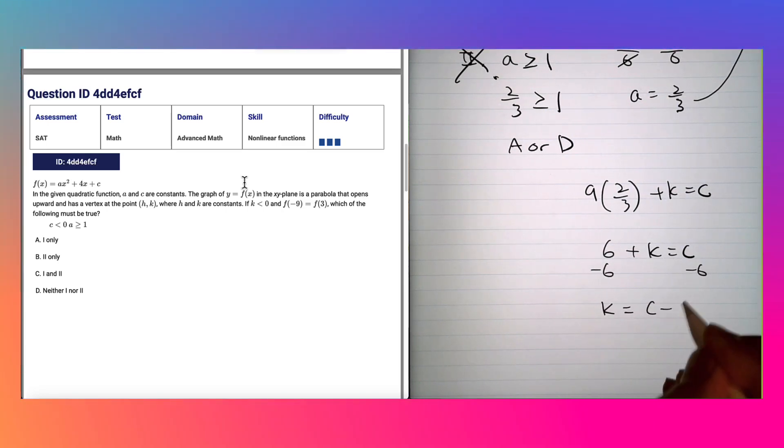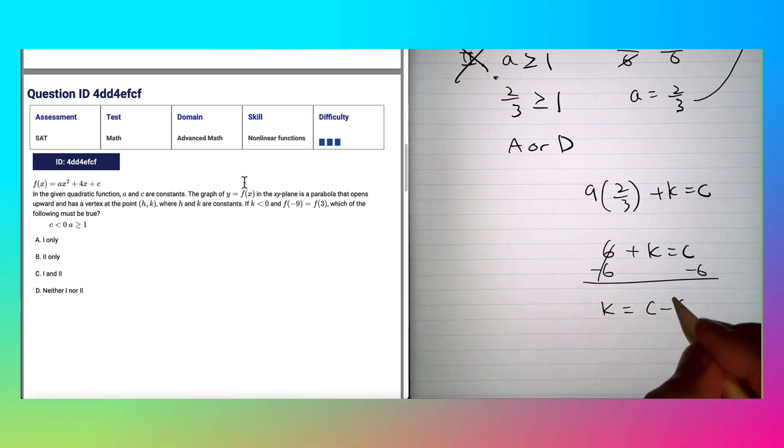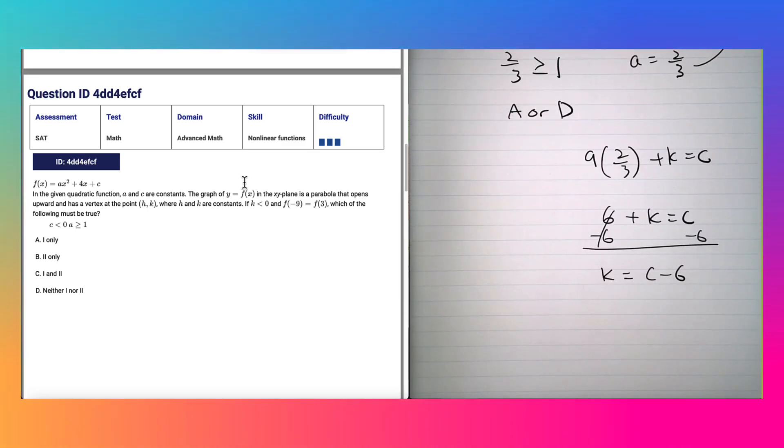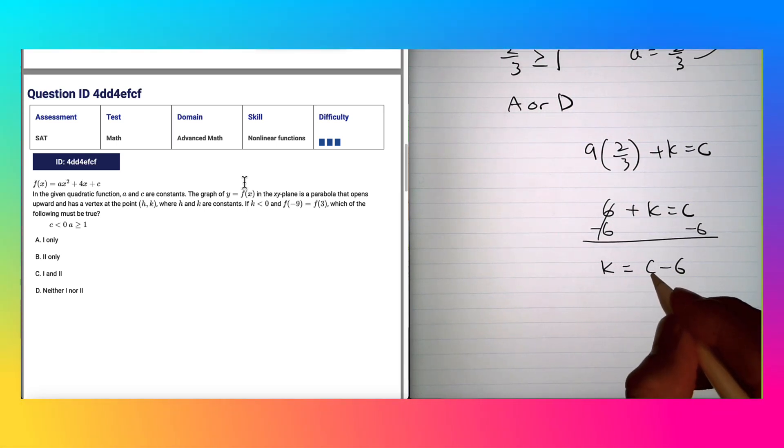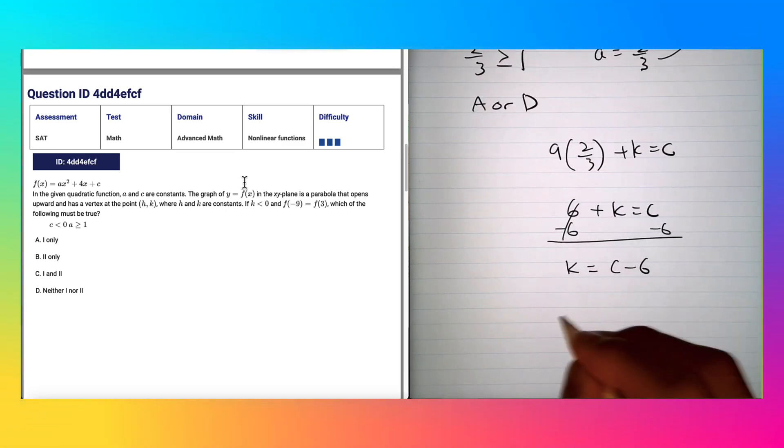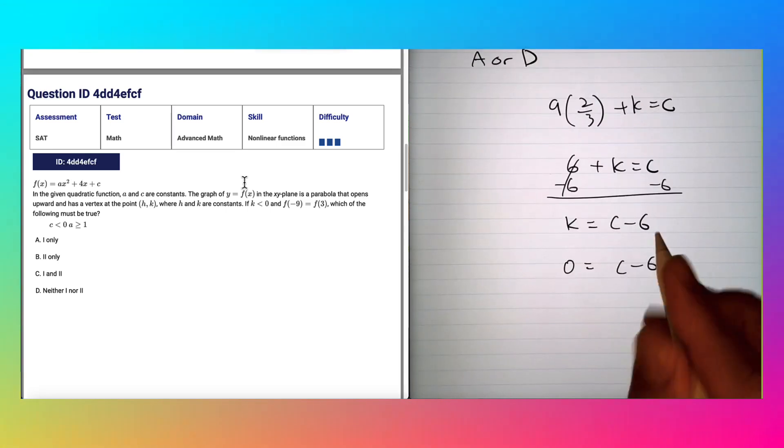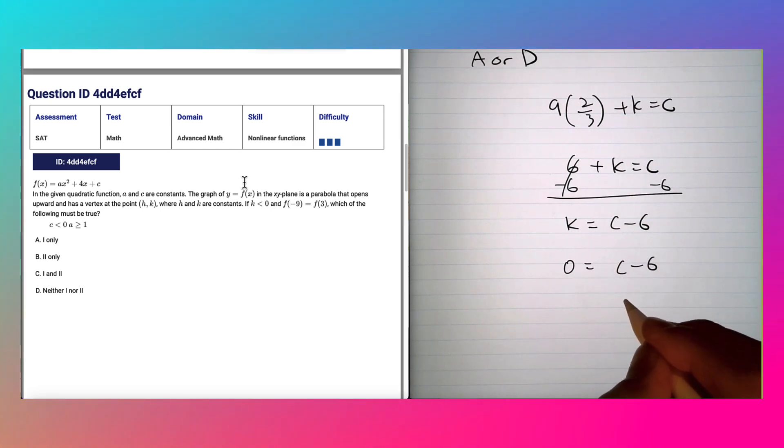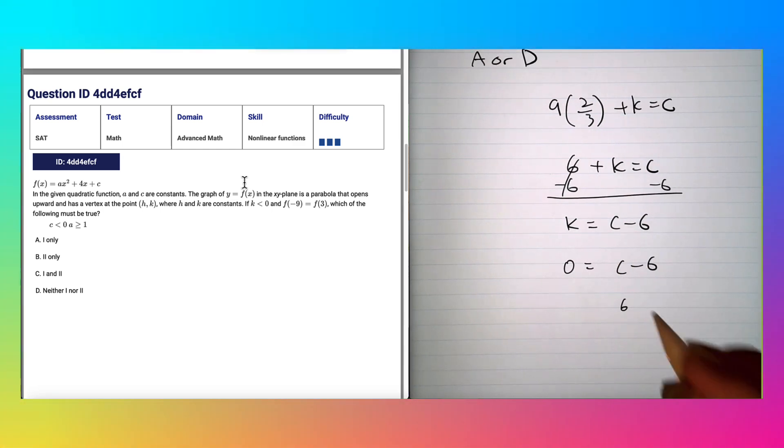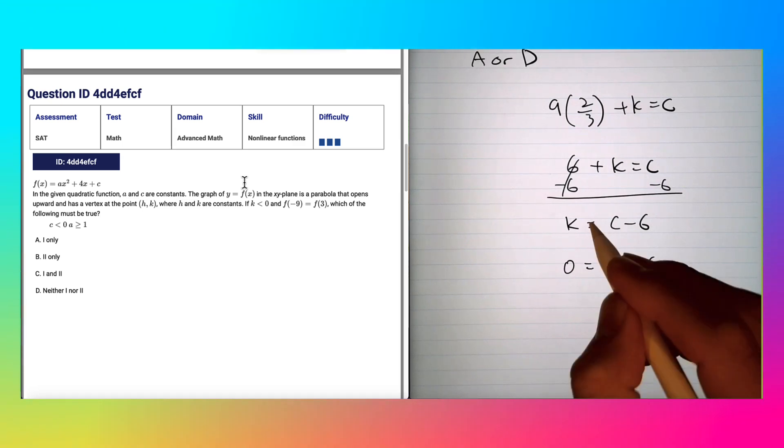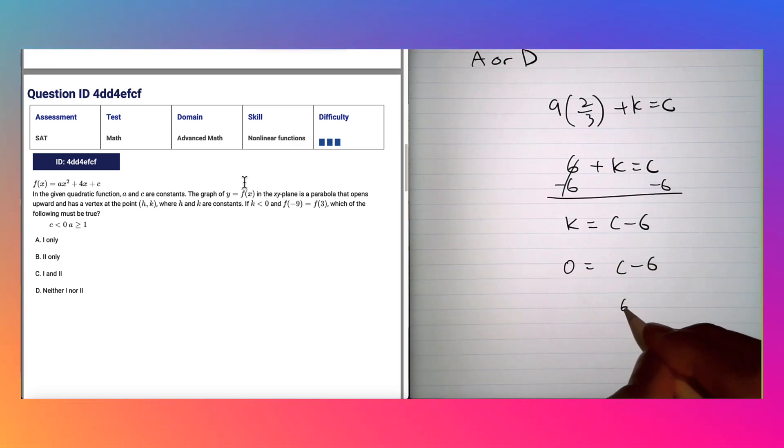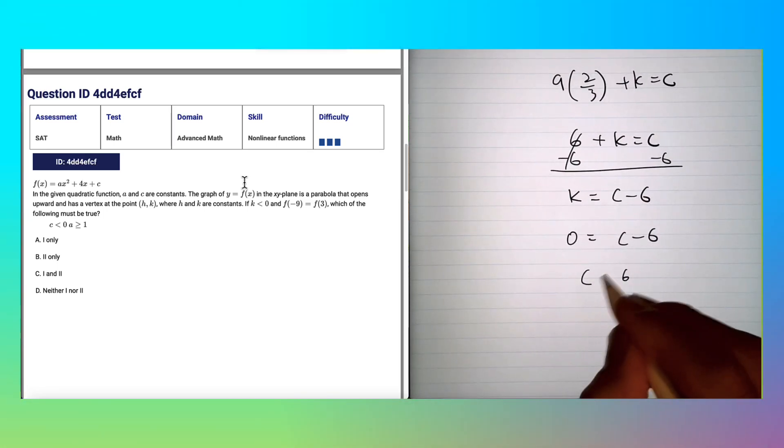Recall that k is less than zero. So if k is less than zero, to just leave k alone, let's just say k = c - 6. If k is less than zero, c can be 6 or less.